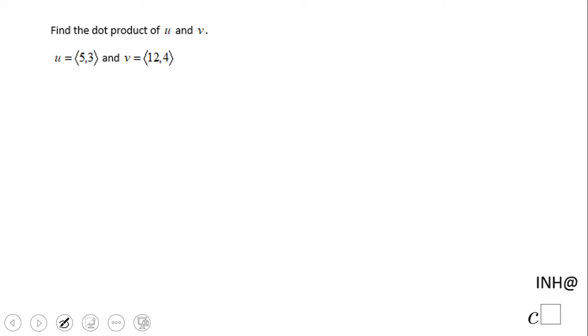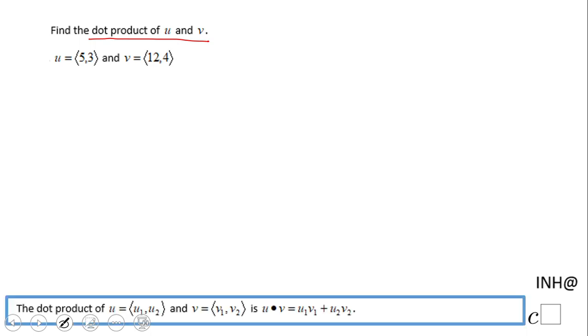Welcome back to C squared. In this example, we're going to find the dot product of two vectors u and v. If you have two vectors, you can find the dot product using this formula.